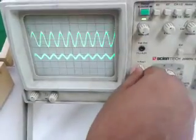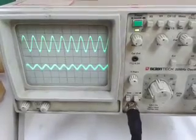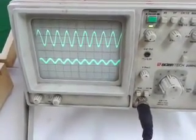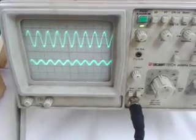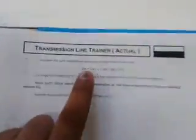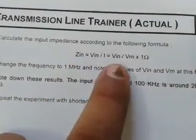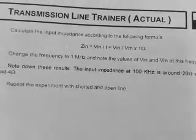The first channel is the input across the 1 ohm resistor. The second channel is the output across it. Measure input and output VIN and VM and put it in the formula given in the manual. ZIN equals to VIN divided by VM to calculate the input impedance of the transmission line.